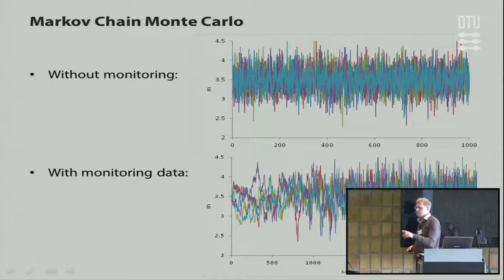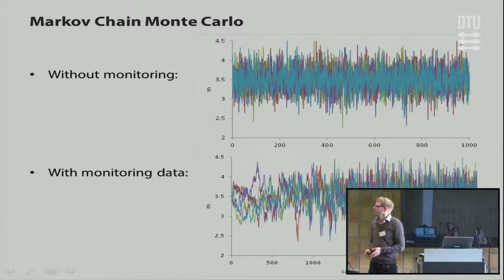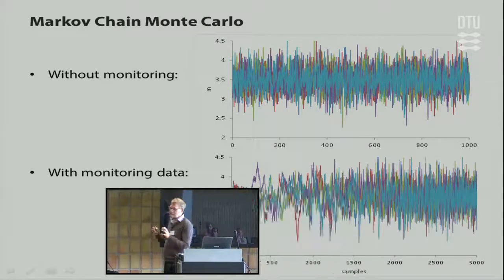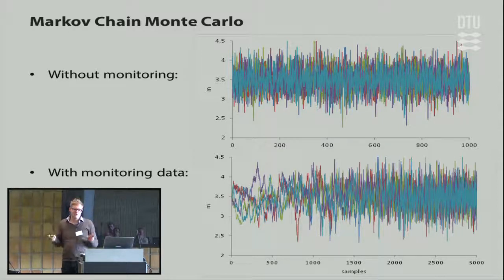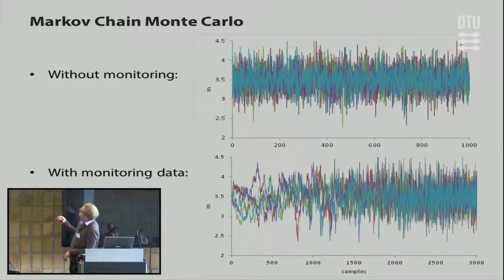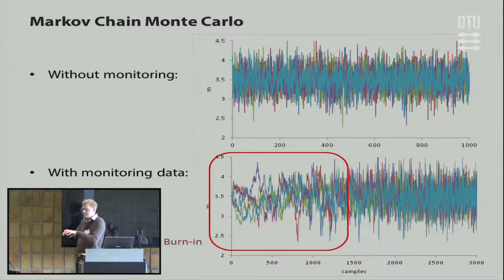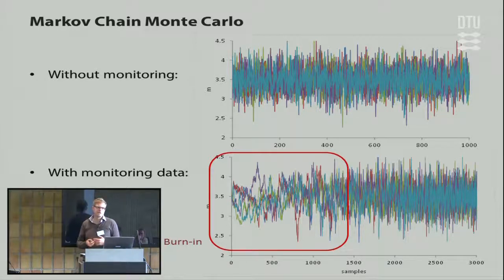In reality, of course, models are not linear or Gaussian, so people often use Markov chain Monte Carlo (MCMC). It produces correlated samples of a Markov chain that, given enough time, follow the posterior distribution. What 'long enough' means is not always clear in practice, which is a problem. An example from Jesus shows that without data, samples already follow the prior, but when monitoring data is included, the chain first has to find the location of the posterior and eventually converges to the solution.